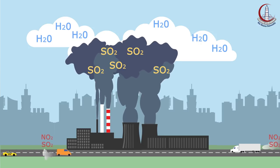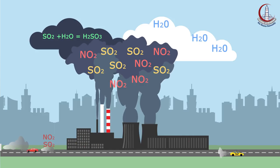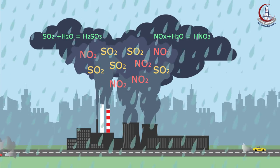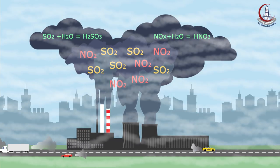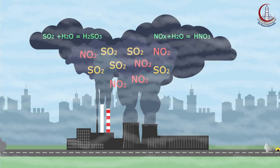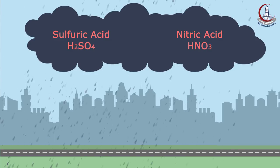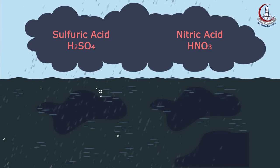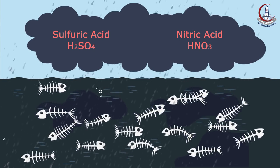When sulfur dioxide reacts with water, sulfuric acid is formed. When nitrogen oxides react with water, nitric acid is formed. These acids fall to the earth either as wet precipitation such as rain, snow, or fog, or as dry precipitation such as gas particulates. Some are carried by the wind, sometimes hundreds of miles. In the environment, acid rain damages trees and causes soils and water bodies to acidify, making the water unsuitable for some fish and other wildlife.